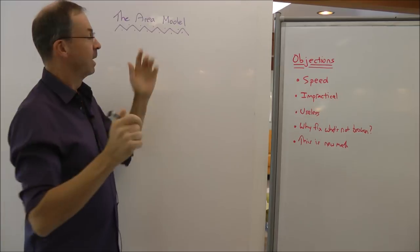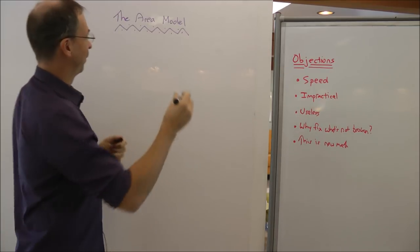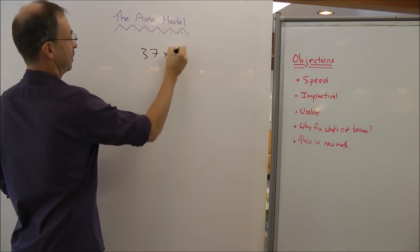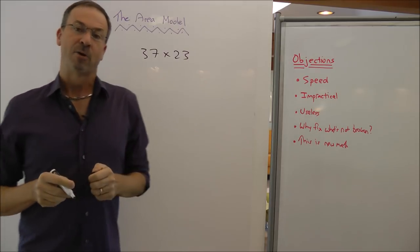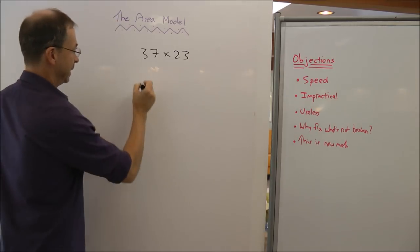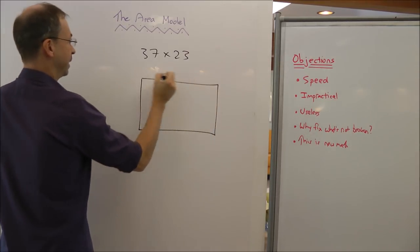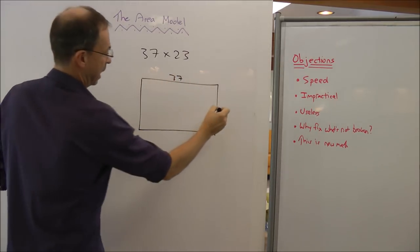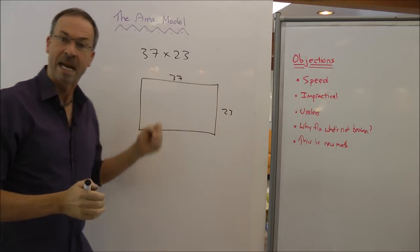Well, the beginning approach to this is the way to understand multiplication. For example, if I need to do a multiplication of 37 times 23, the area model says don't think of this as an arithmetic problem, think of this as a geometry problem. Take a rectangle that is 37 inches long and 23 inches high, and ask what's the area of that rectangle?